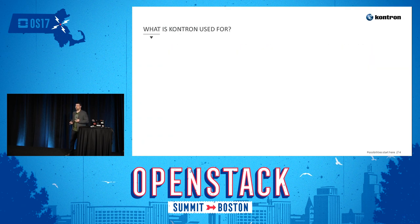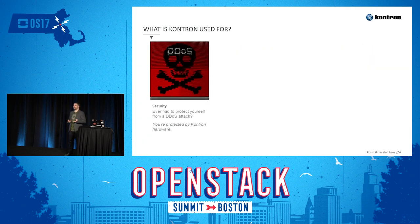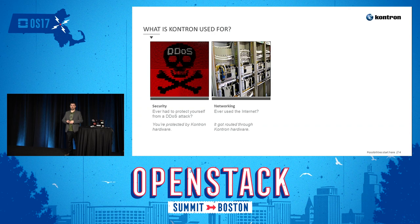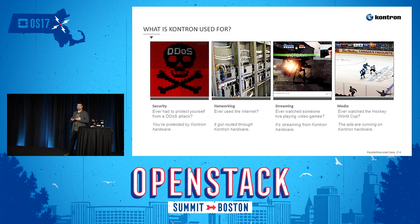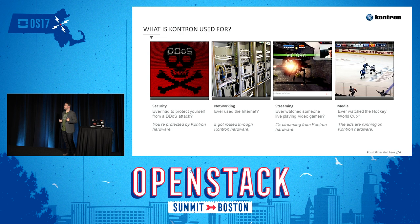Some customer examples where our products are used: anti-DDoS — if you've ever been protected from an attack and not just null-routed, it was probably a Contron box at the core. For internet routing, cat pictures and anything else probably got routed through our gear. Video game streaming — one of the biggest platforms out there is powered by our platform. And for the Hockey World Cup, those tailored ads by country — here in Canada it's Tim Hortons — that ad placement is powered by our system.